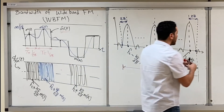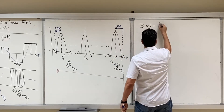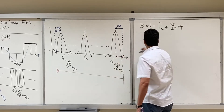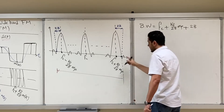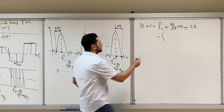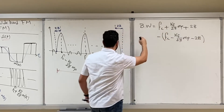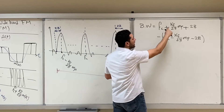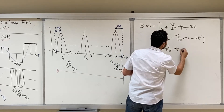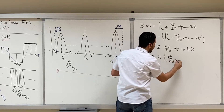The bandwidth is the difference between the position of the upper zero, which is fc + kf/(2π)·mp + 2B, minus the lower zero, which is fc − kf/(2π)·mp − 2B. Subtracting these, fc cancels, and we get 2 × [kf/(2π)·mp] + 4B, which can be written as 2·[kf/(2π)·mp] + 4B.